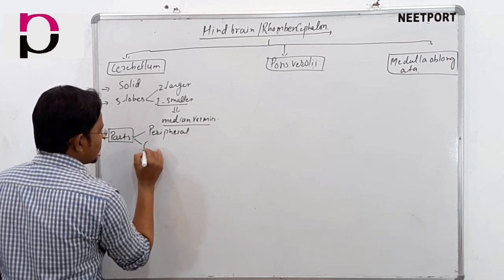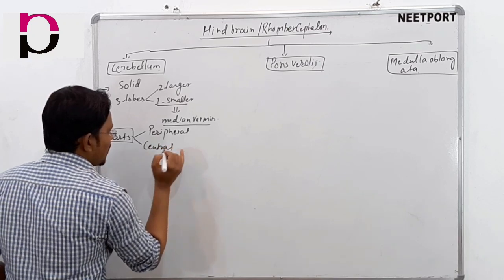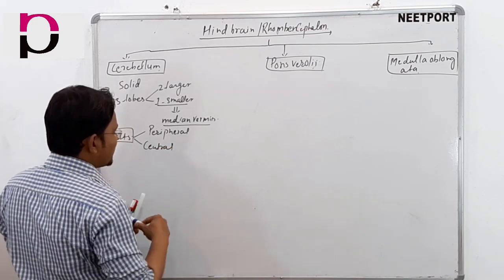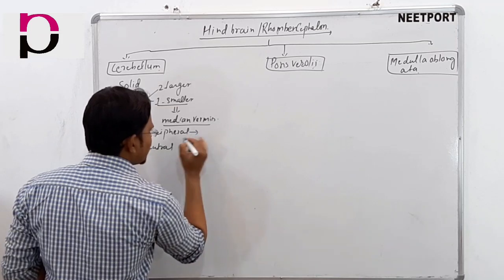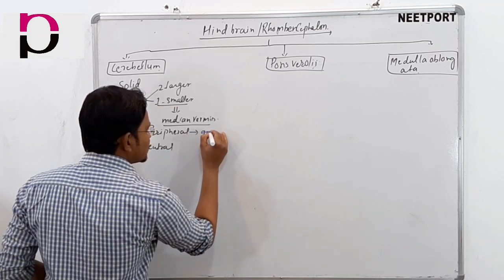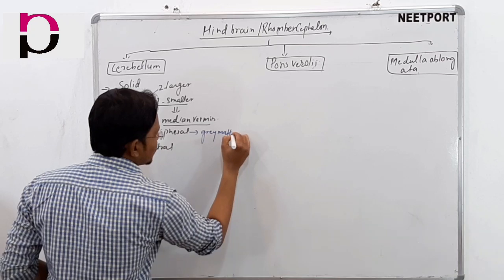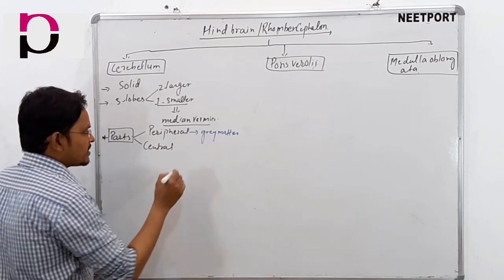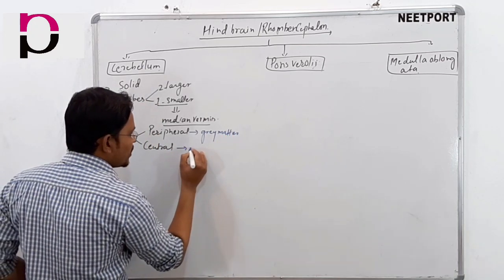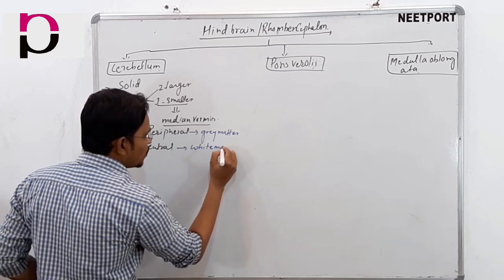Cerebellum has two parts: one is the peripheral part and another is the central part. The peripheral part is basically composed of grey matter, while the central part is made up of white matter.